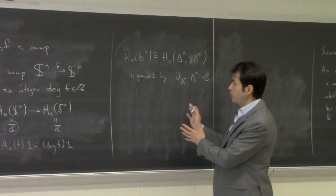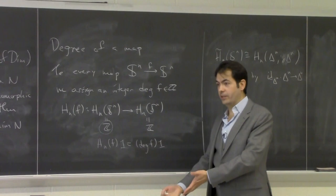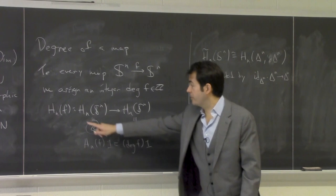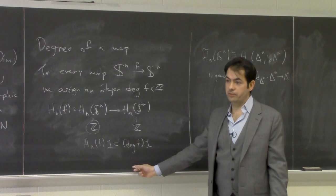Picking a preferred generator really means picking an orientation on R^n — the usual orientation, putting S^n in R^{n+1}. If the map preserves orientation, the degree is a positive integer; if it reverses orientation, the degree is negative.